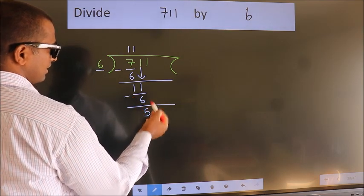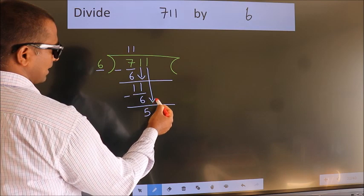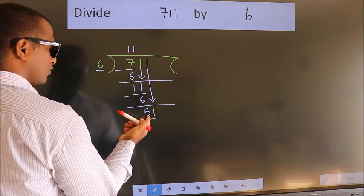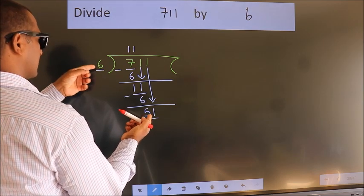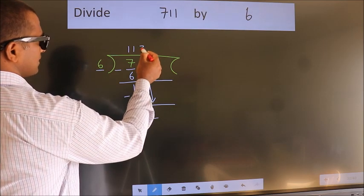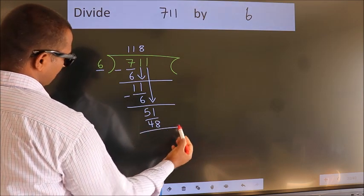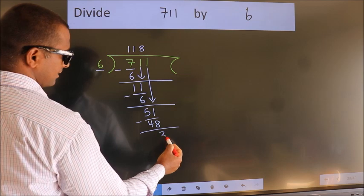After this, bring down the beside number. So, 1 down. So, 51. A number close to 51 in 6 table is 6 times 8 is 48. Now we subtract. We get 3.